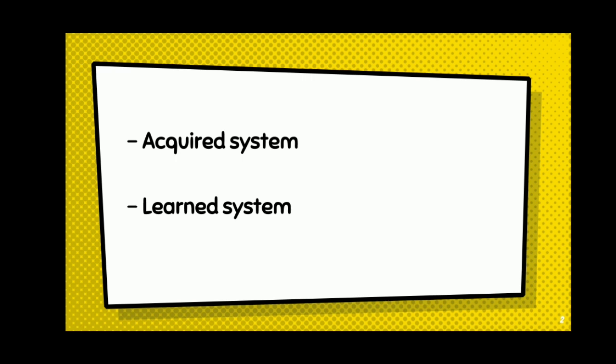The focus of the acquired system is the meaning of communicating. The learned system concerns formal instruction to acquire knowledge about the target language, and the focus of the learned system is the structure of the language.